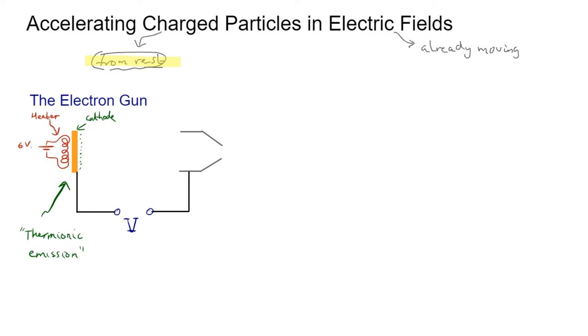Once the electrons are boiled off the surface, we've got a potential difference between the cathode and the anode, which is shaped to let some electrons through. In reality, the situation is more sophisticated, but in simple terms, the electrons are attracted towards the anode. We're assuming this is the positive side and this is the negative side. The anode attracts the electrons, which were initially stationary.